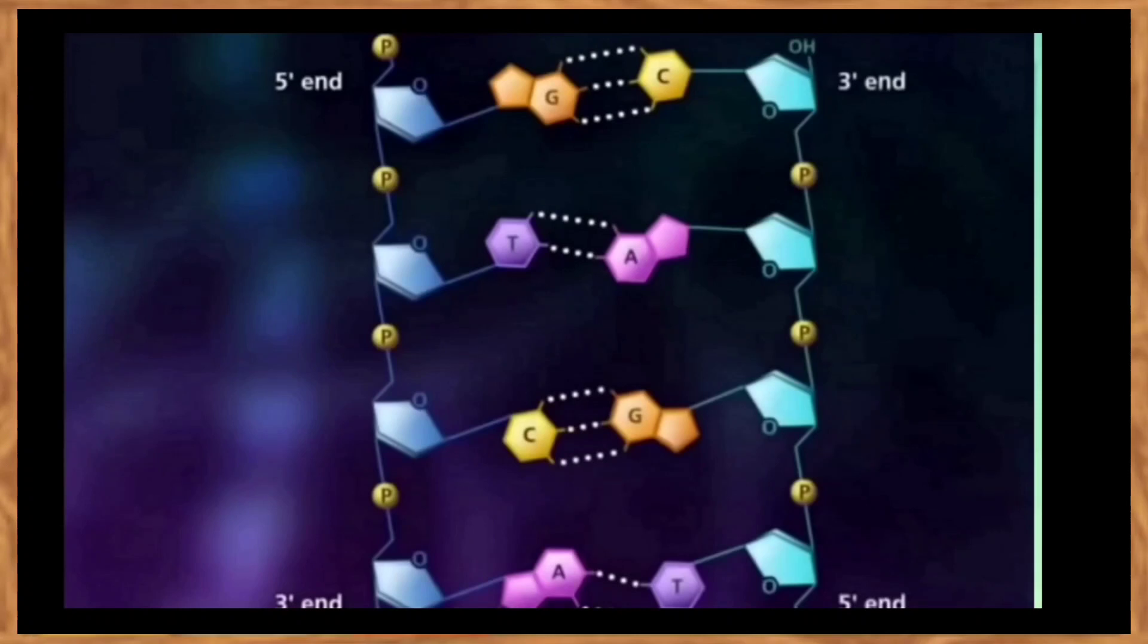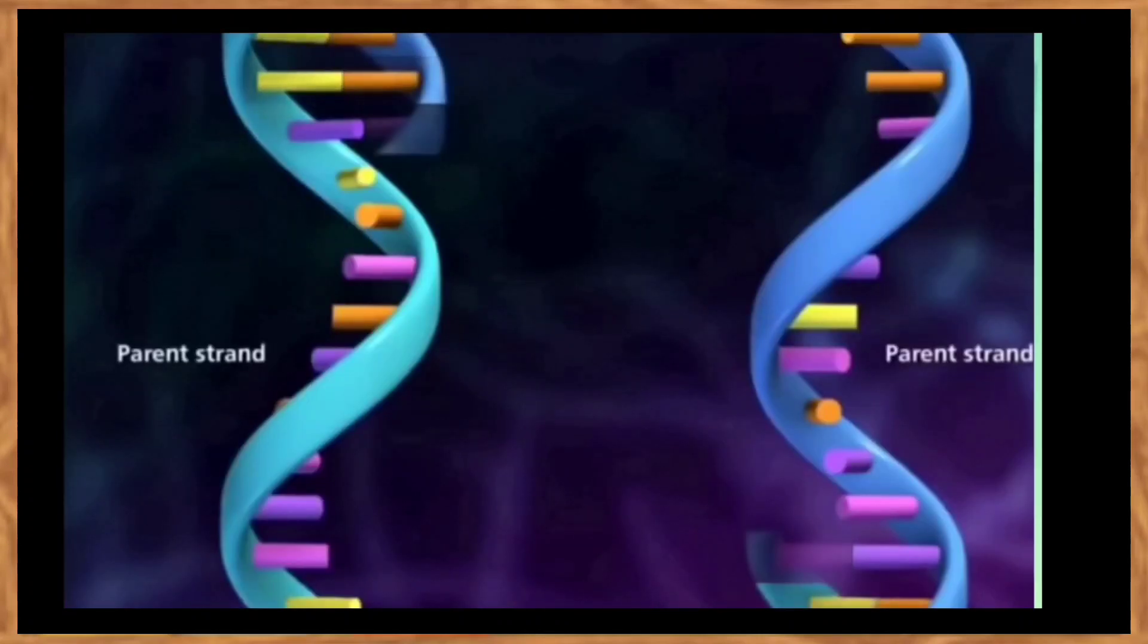Each strand has a 5' end and a 3' end. The two strands run in opposite directions. This determines how each strand of DNA is replicated.